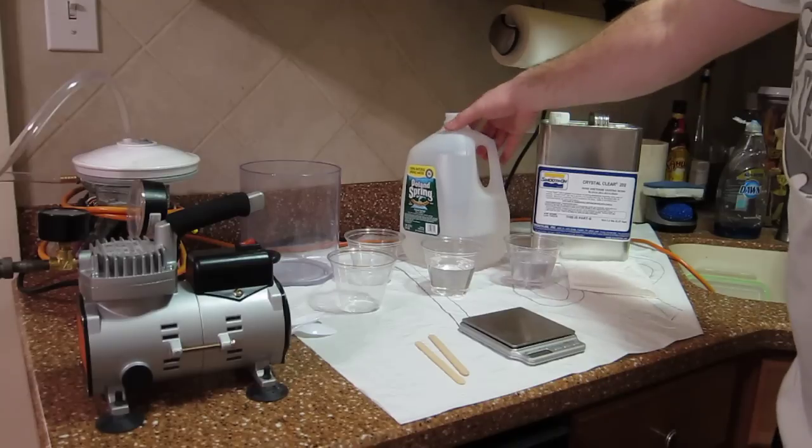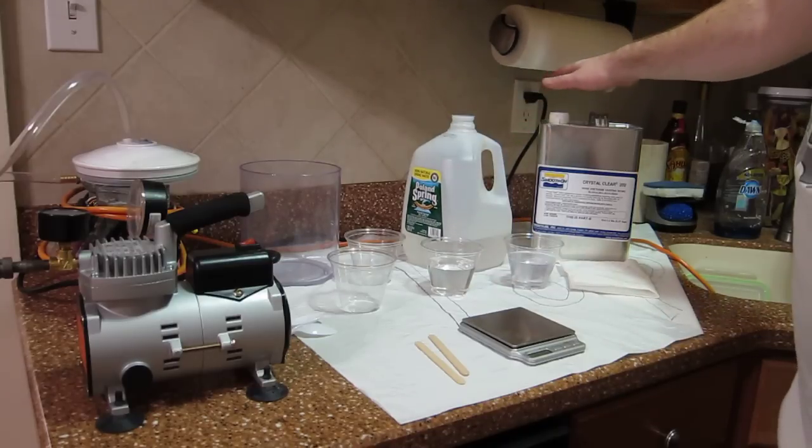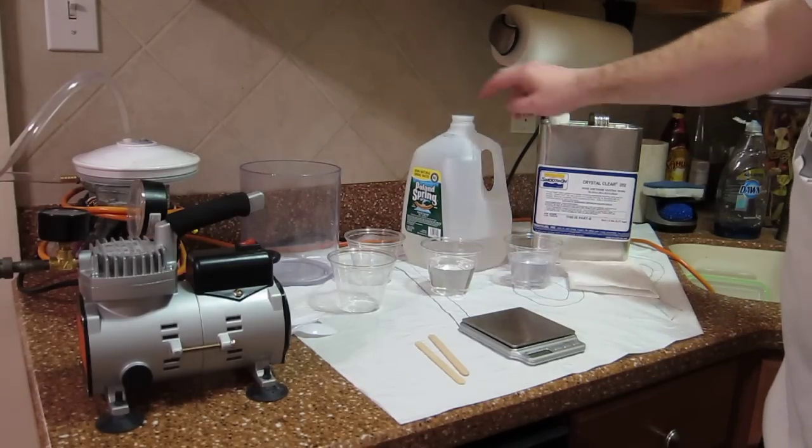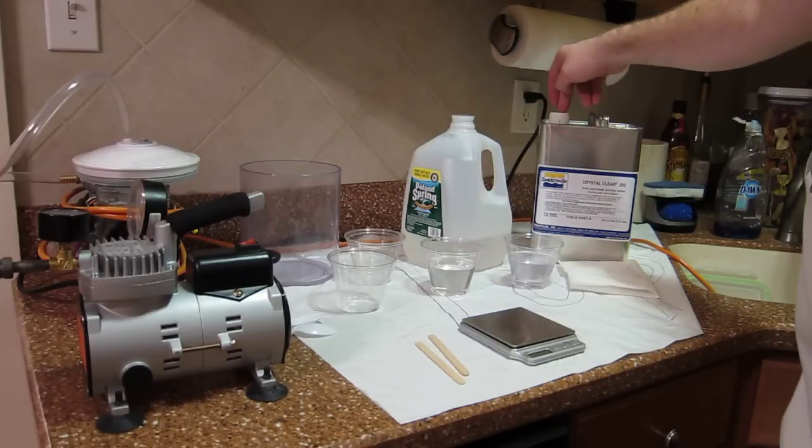Part A and Part B. The full-on spring bottle is Part A and this is Part B. It's going to be a hundred parts to ninety parts mix.